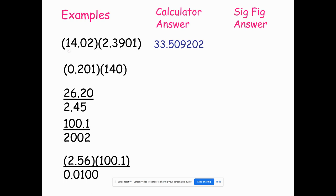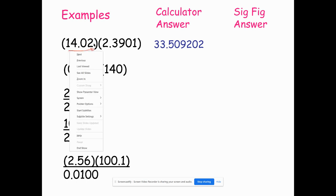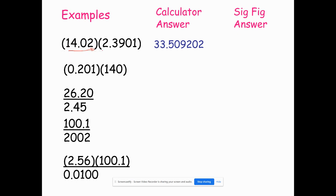Decimal point is present, start at the Pacific. Decimal point present, start at the Pacific. And so now there's one, two, three, four significant figures, and one, two, three, four, five significant figures. So I need this answer down to four significant figures.